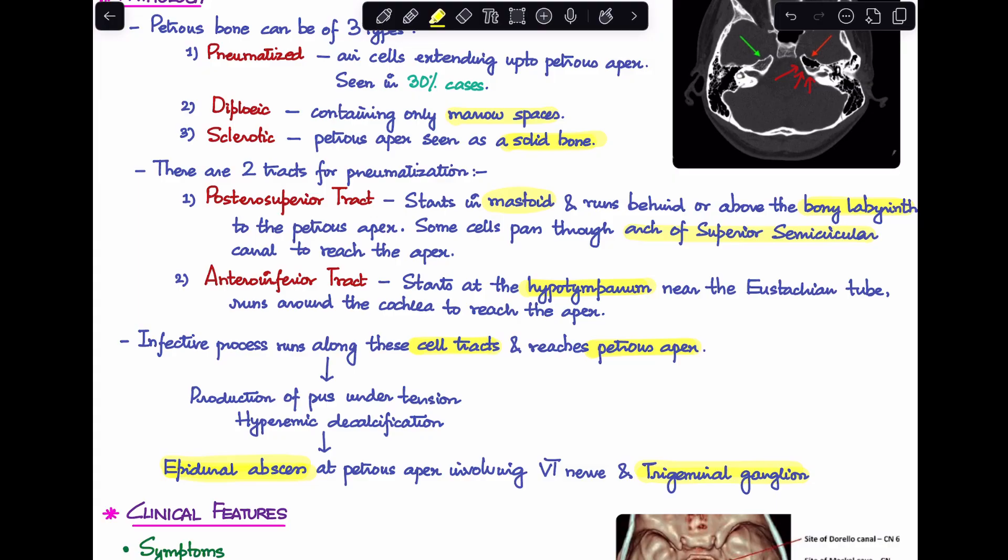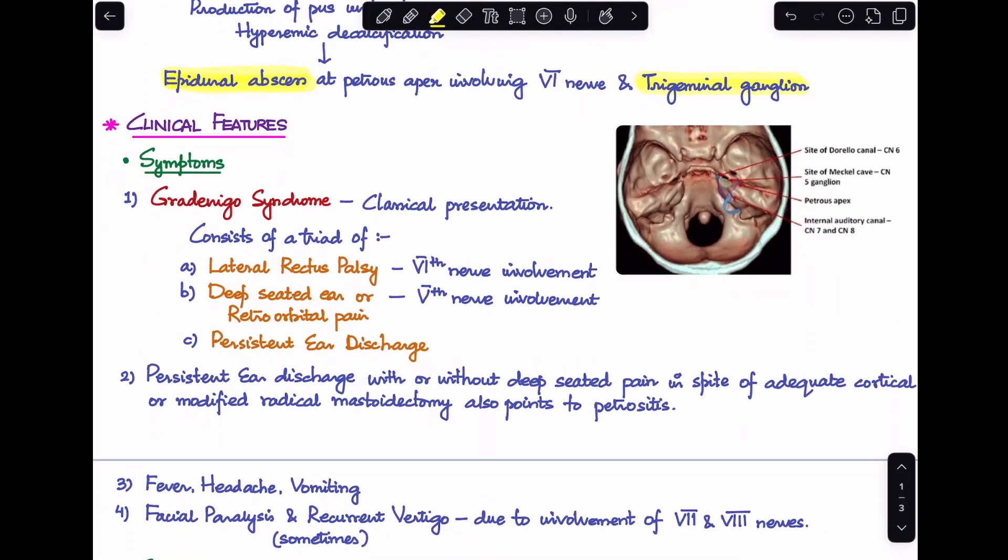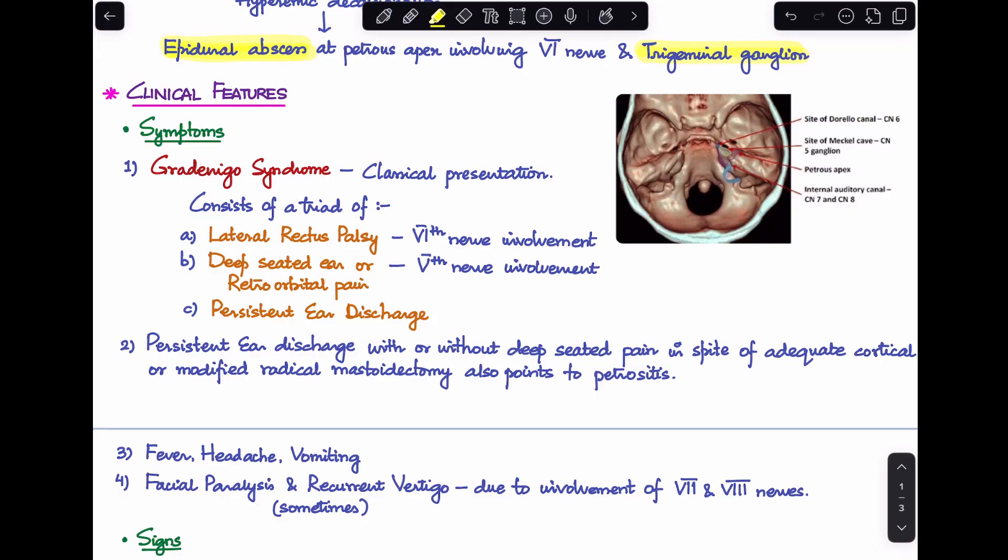Now that we have discussed this, let's discuss what are the possible features we'll see in a case of petrositis. Petrositis is characterized by the syndrome known as Gradinigo syndrome. Gradinigo syndrome is basically a syndrome where you see a triad of features. This is the classical presentation that you see in a case of petrositis.